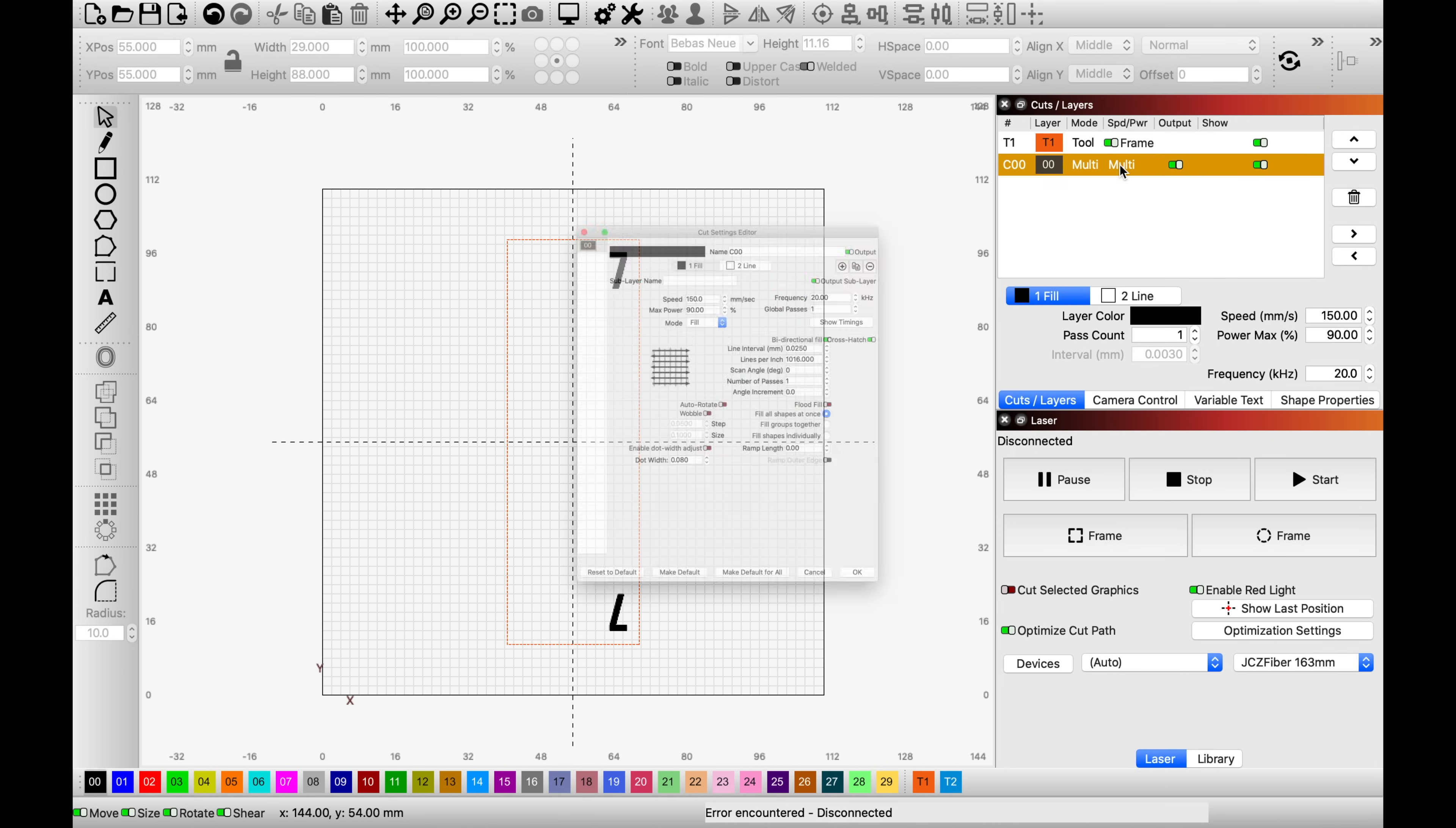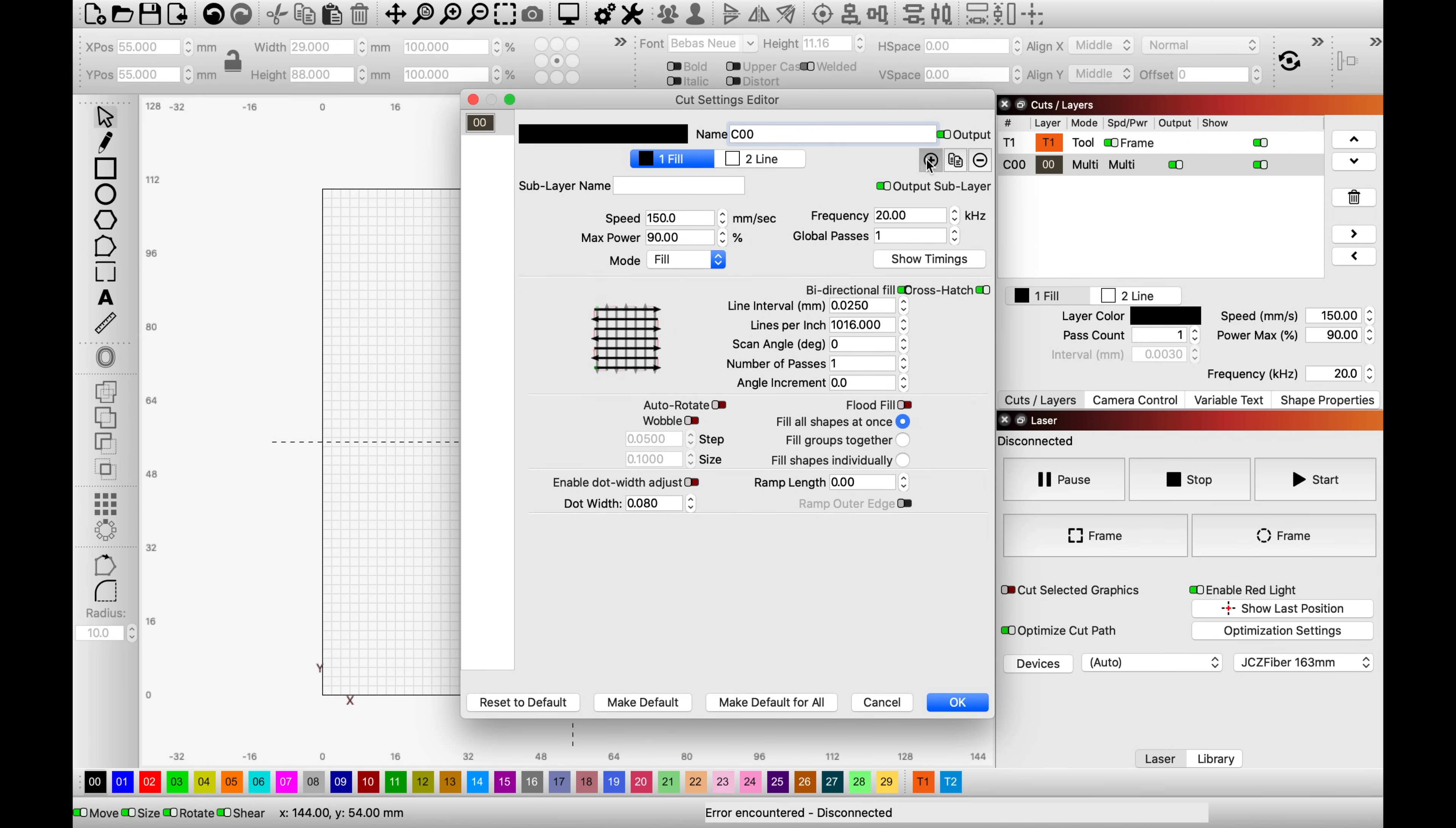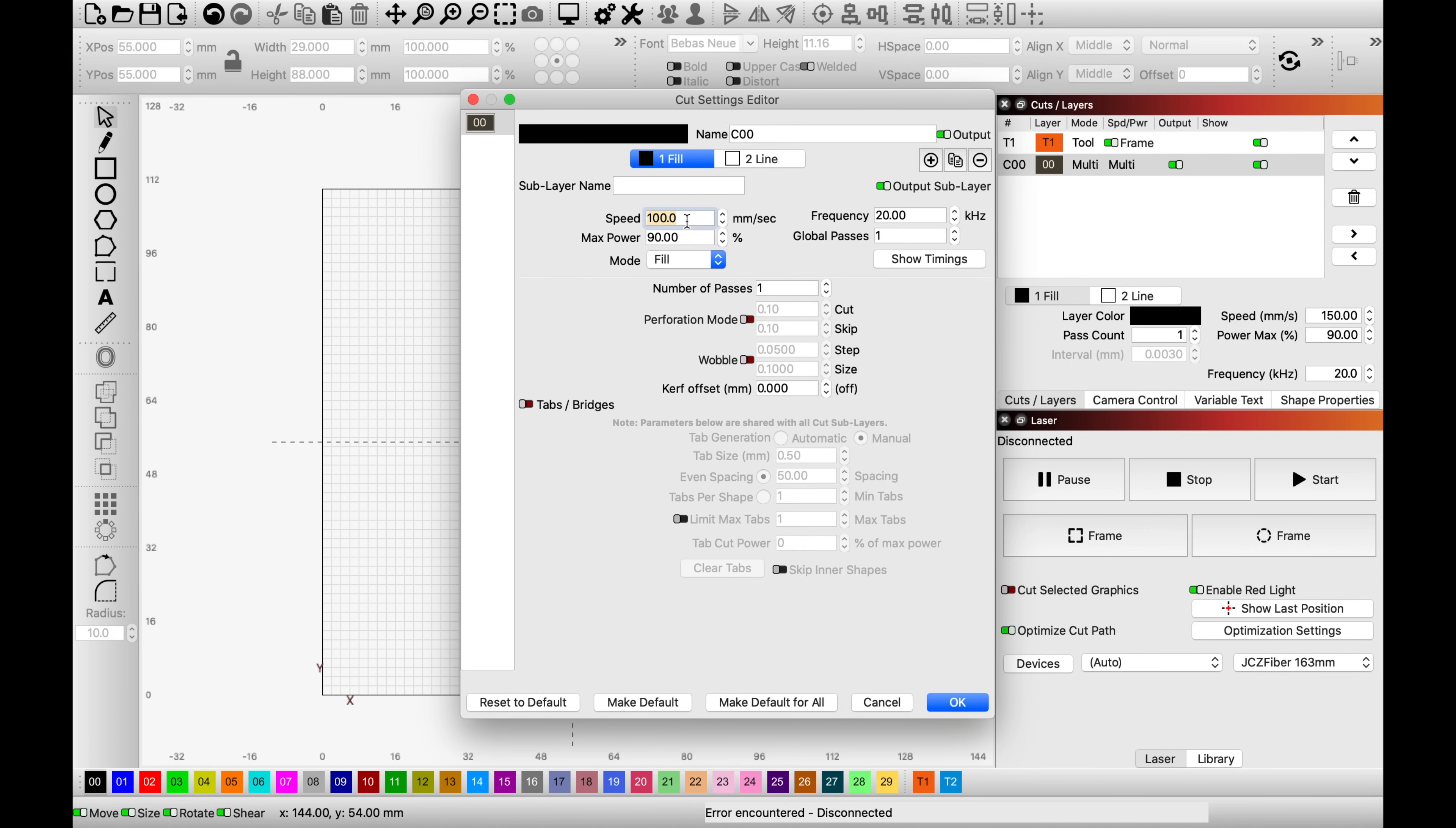And you'll note that they're different colors and that's because they're on different layers. And in Lightburn, things on different layers can have specific settings. So in this case, everything on the black layer is going to have a specific set of burn settings and everything on the red layer, I've chosen not to output at all.